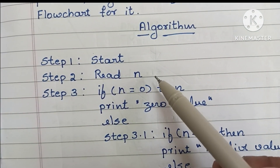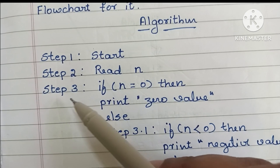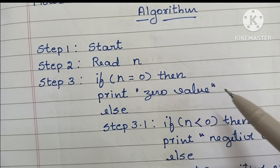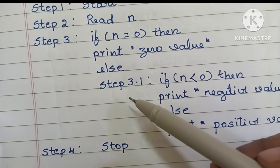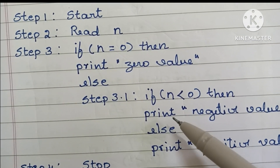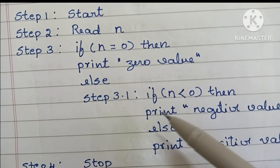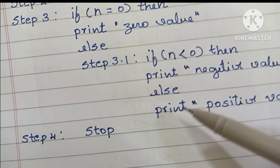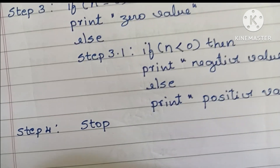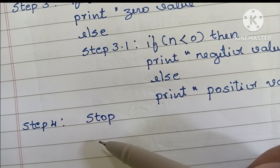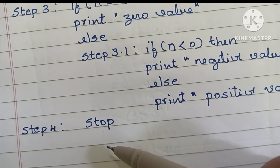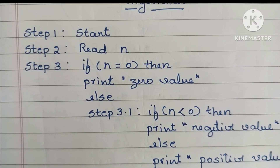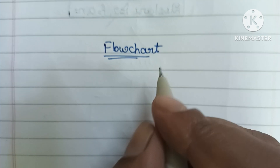Step two: read N. Step three: check if N equals zero — if true, print the result; else print positive value. Step four: stop the algorithm using the stop statement. Next, we have to draw a flowchart.